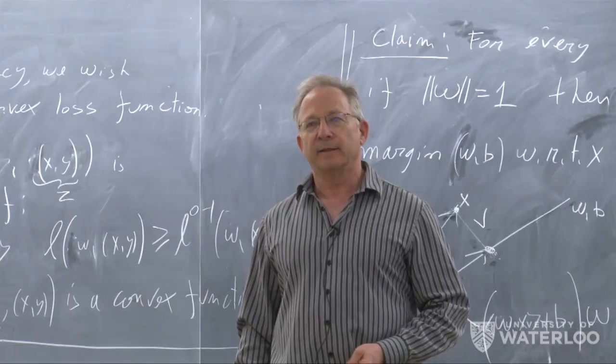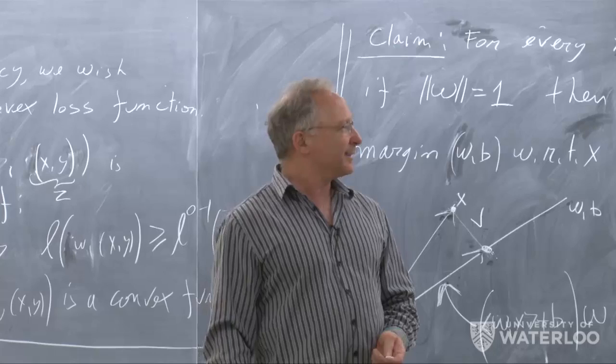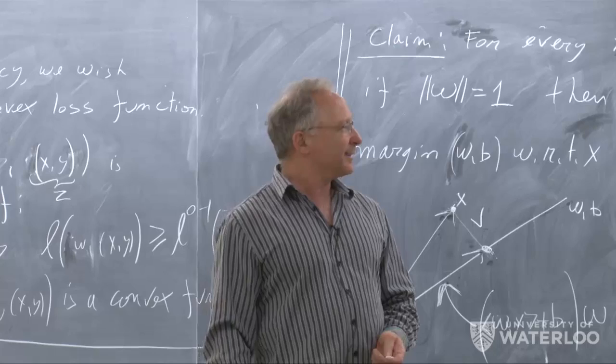All of this is under the constraint that W has norm 1. That's not a convex constraint, but we will restrict W's to all W's of norm at most 1 — that is a convex set. If I have a W of smaller norm, by increasing W I increase the margin, so I will always choose something with norm exactly 1.